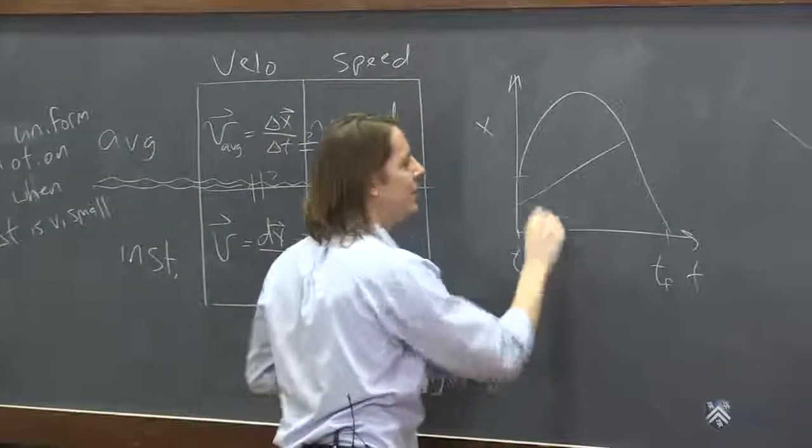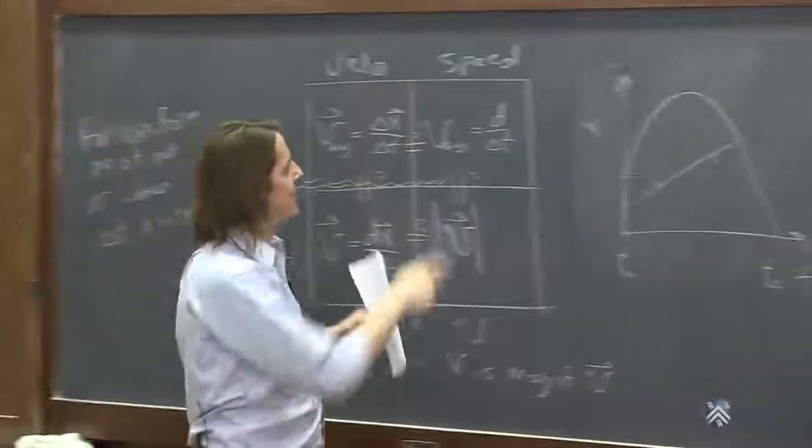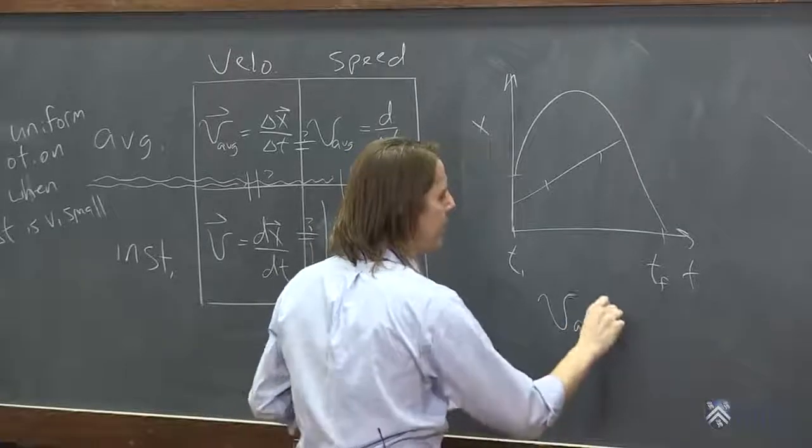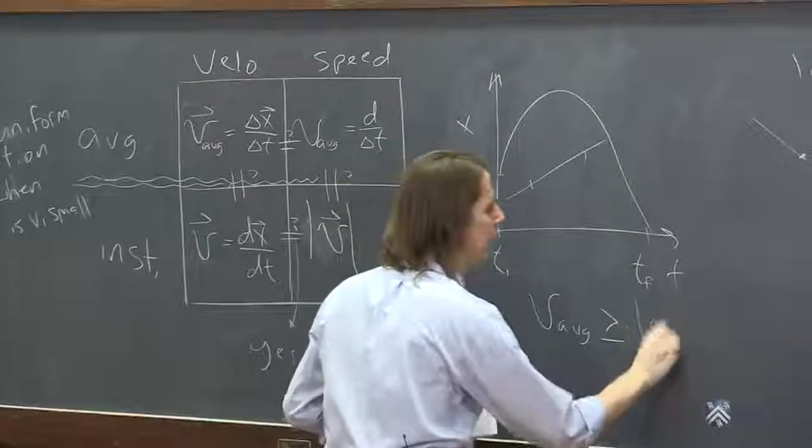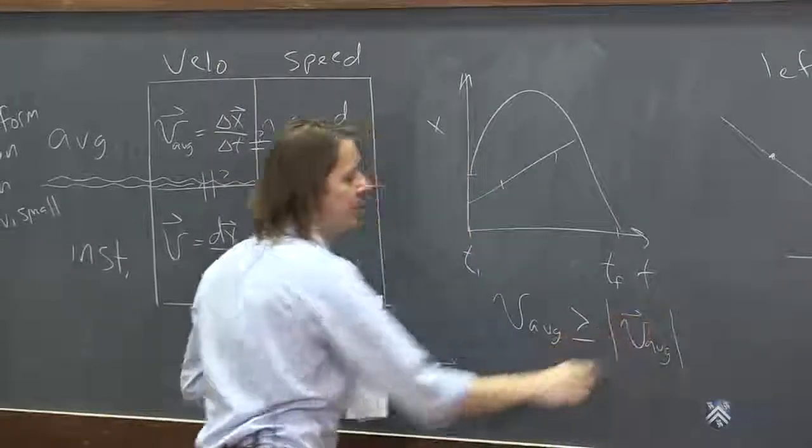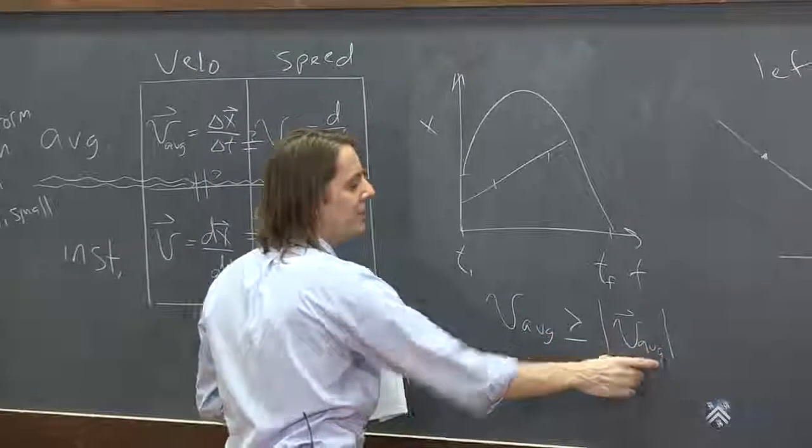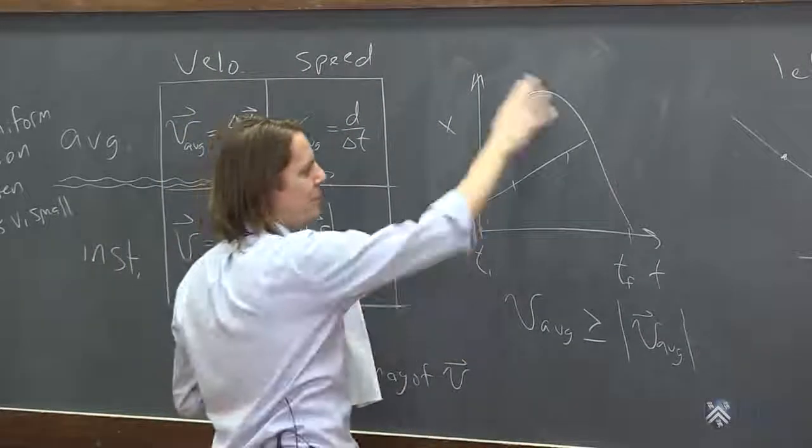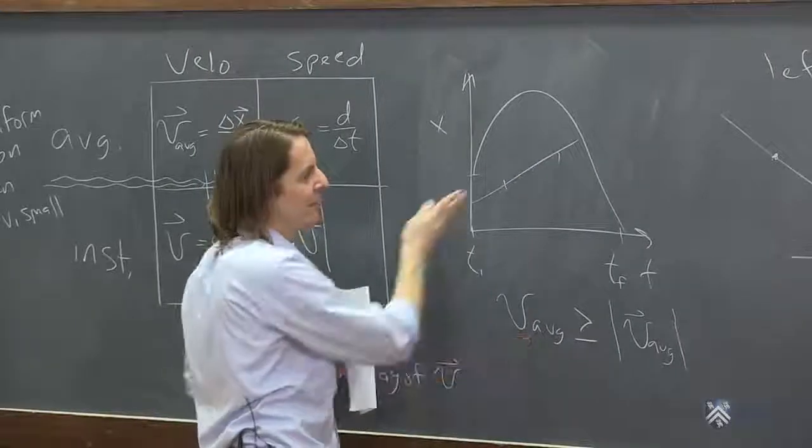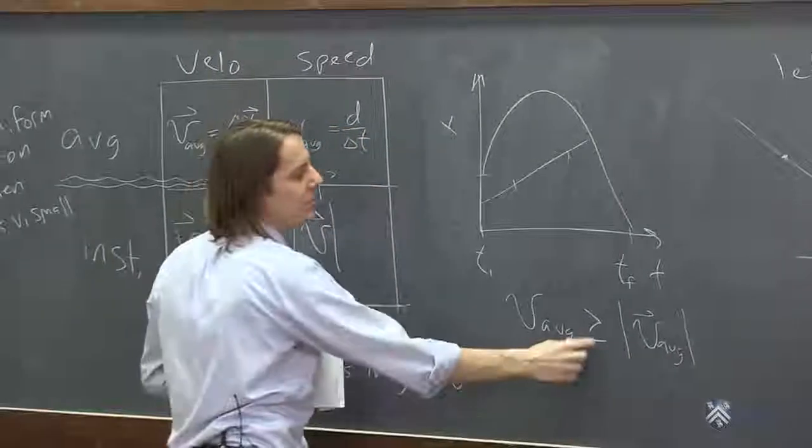If you have a uniform motion and you look between here and here, they'll be the same. So the way you could say it is that the average speed will always be greater than or equal to the magnitude of the average velocity. If it's a curvy path, the speed will be bigger because it went farther in terms of distance. If it's a linear path, then they both went the same distance and displacement and they'll be equal, so greater than or equal.